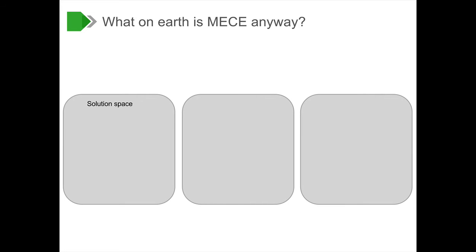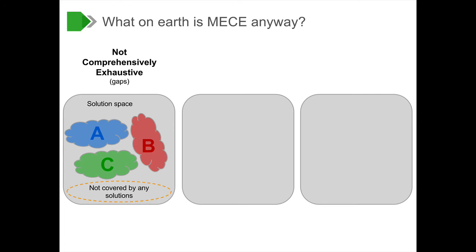So what is this MECE thing anyway? Assume you have a solution space, and you come up with three solutions. You'll notice that each of these three solutions are entirely separate, they have no overlap, but what you'll also notice is that there's a part of the solution space not covered by the three solutions. This is what we mean when we say something is not comprehensively exhaustive. The solutions do not exhaust the solution space.